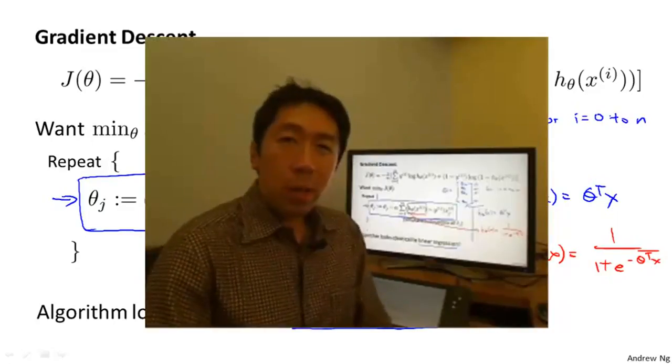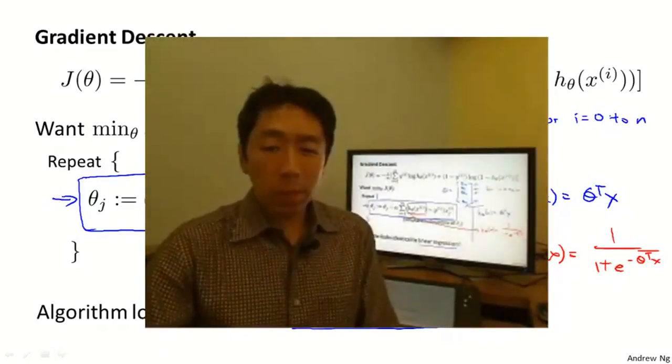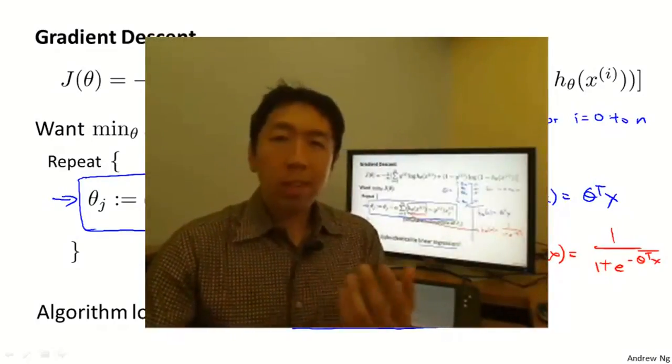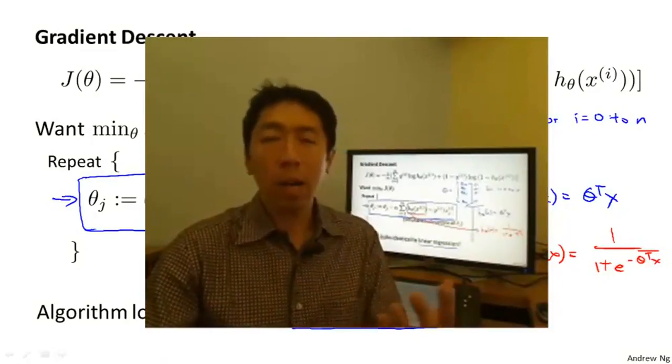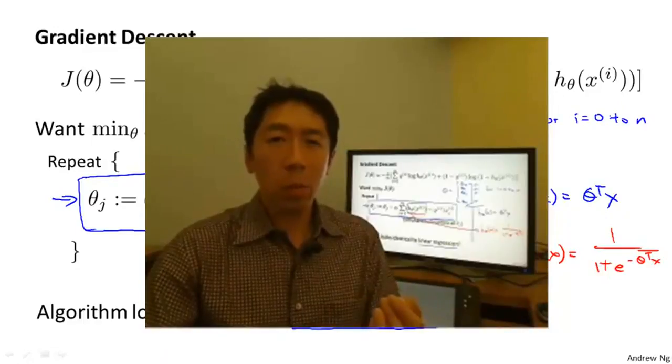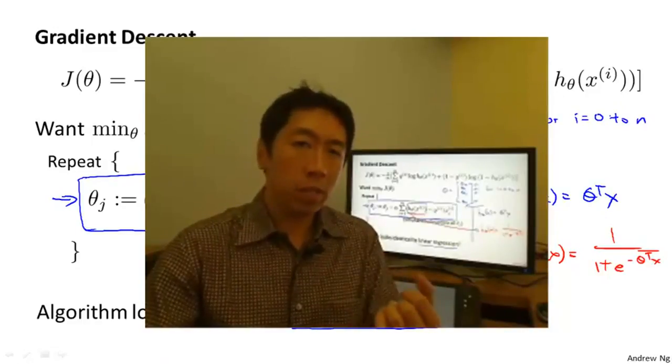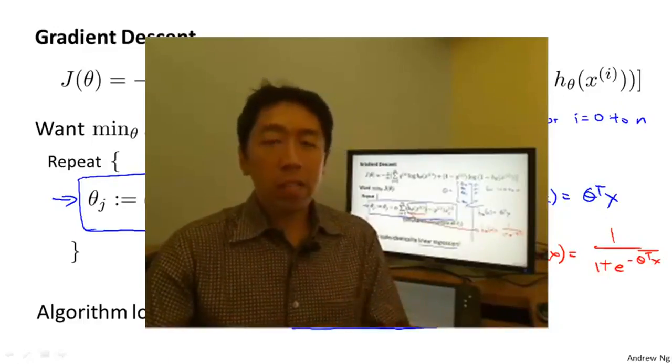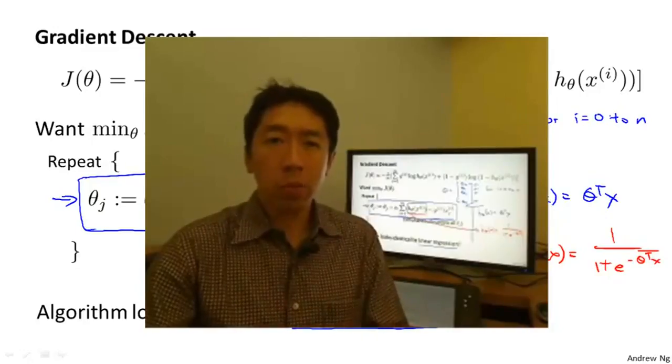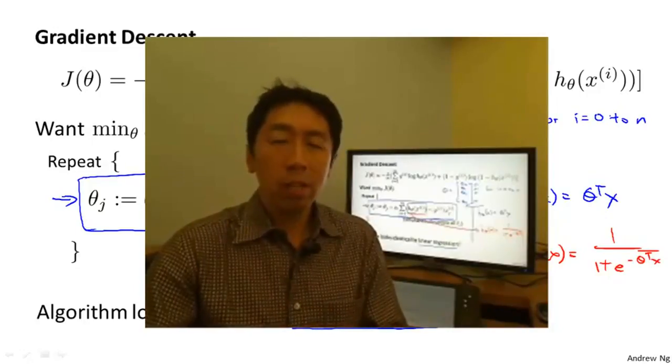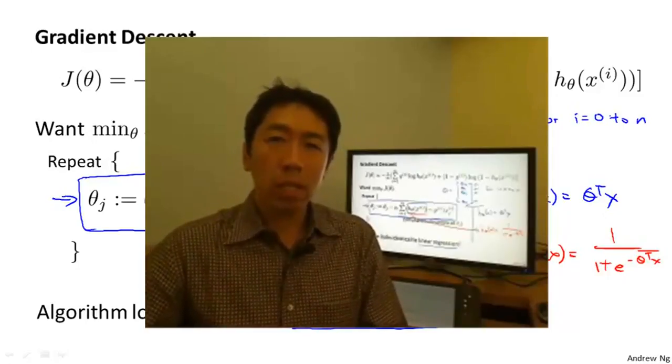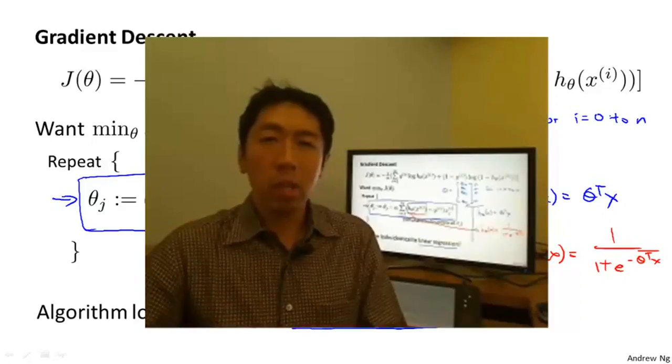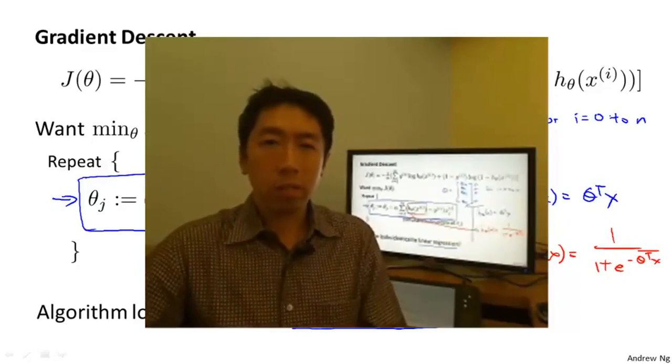So now you know how to implement gradient descent for logistic regression. There was one last idea that we had talked about earlier for linear regression, which was feature scaling. We saw how feature scaling can help gradient descent converge faster for linear regression. The idea of feature scaling also applies to gradient descent for logistic regression. And if you have features that are on very different scales, then applying feature scaling can also make gradient descent run faster for logistic regression.